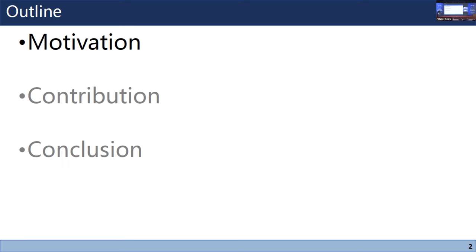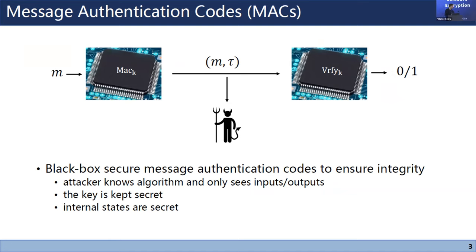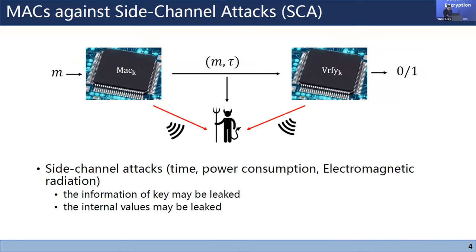Message authentication codes (MACs) are a symmetric-key primitive to ensure data integrity. The sender authenticates a message using a tag generation algorithm and sends the message and tag to the receiver. The receiver uses a verification algorithm and accepts or rejects the message. Classically, MACs are designed in a black-box way where the attacker only knows the algorithm and sees inputs and outputs while the key and internal values are secret.